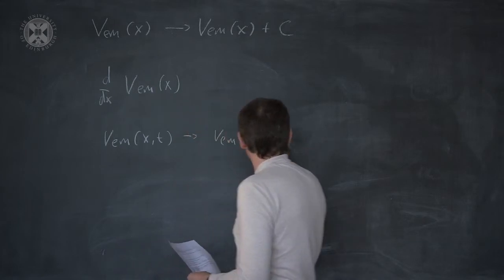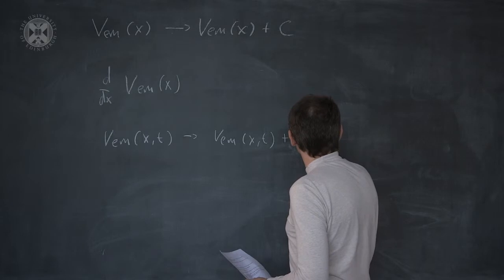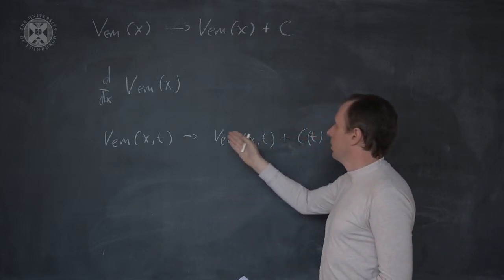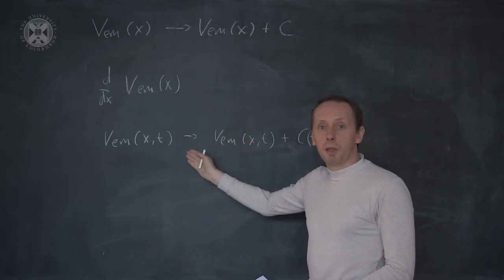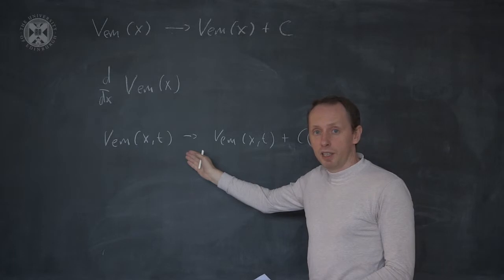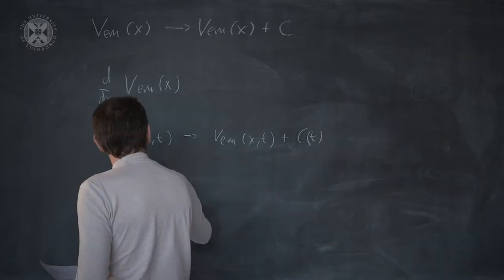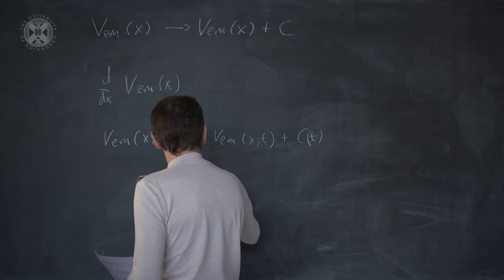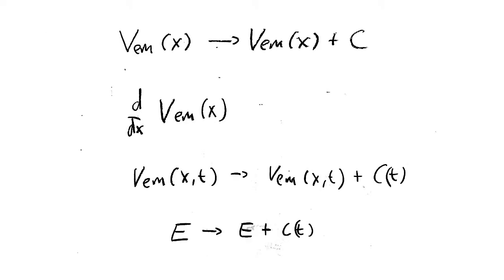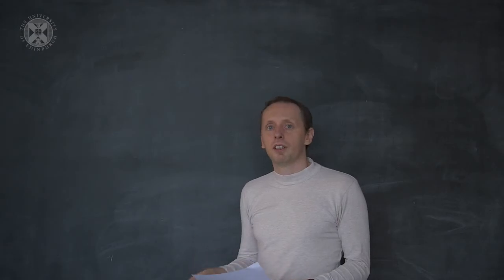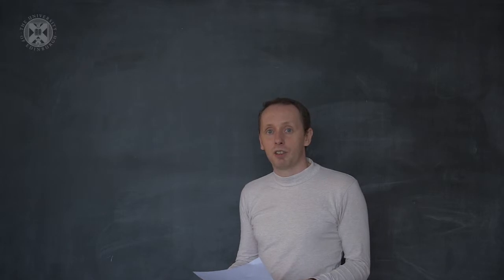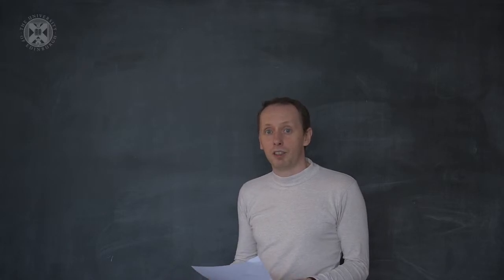Therefore, the electric field remains unchanged, but the energy we associate with a particle living in this potential becomes an arbitrary function of time. This is a particular example of gauge invariance, which is explained in more detail in the supplementary notes.